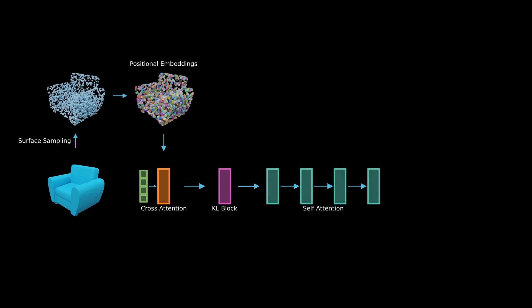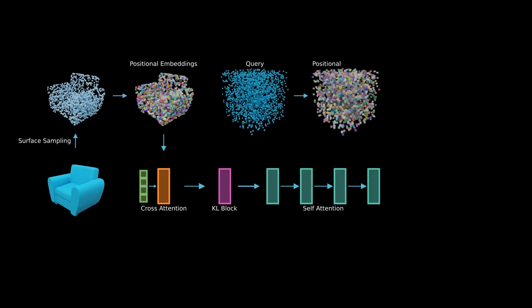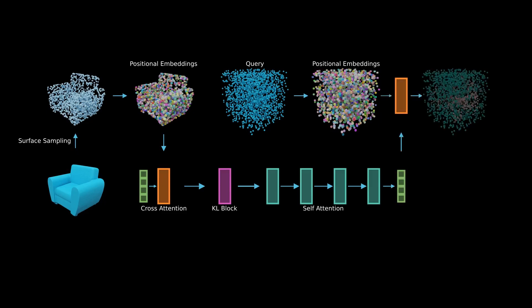To reconstruct a neural field, we use query points encoded using positional embeddings. We cross-attend the query points with a set of latent vectors from the shape representation. We get an output occupancy for each point. The final shape can be reconstructed with an isosurface extraction algorithm.